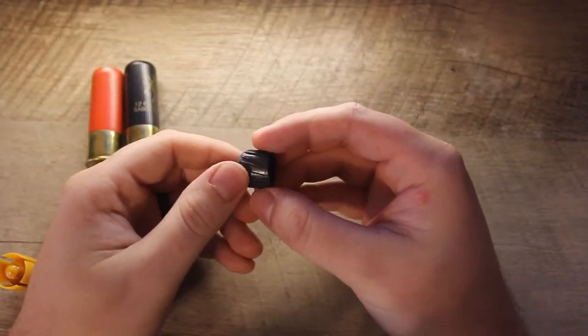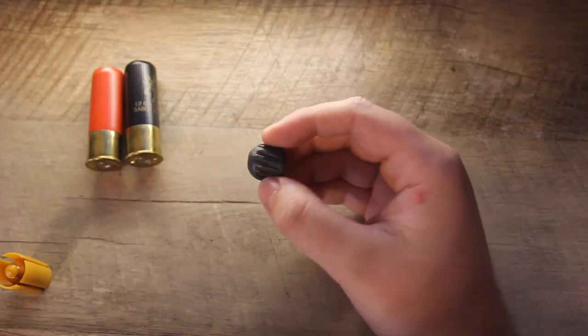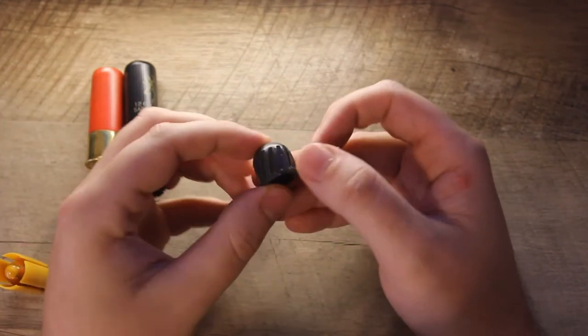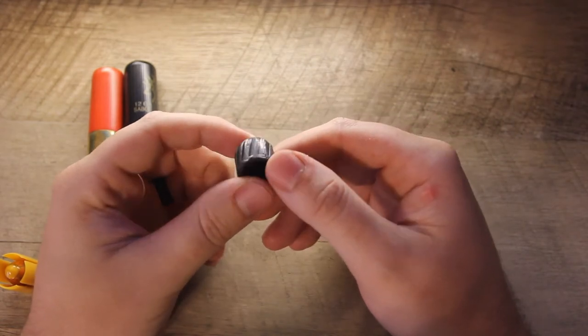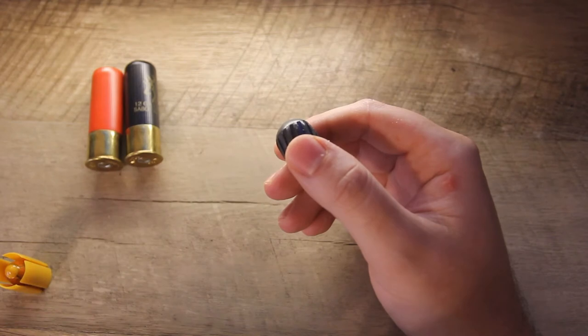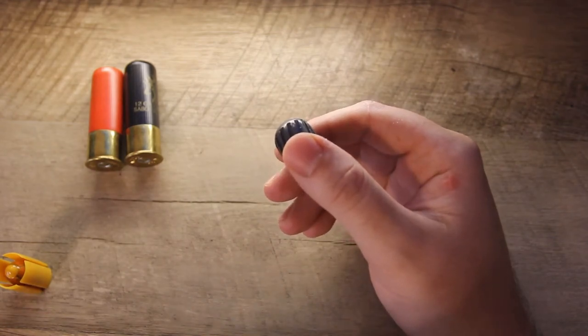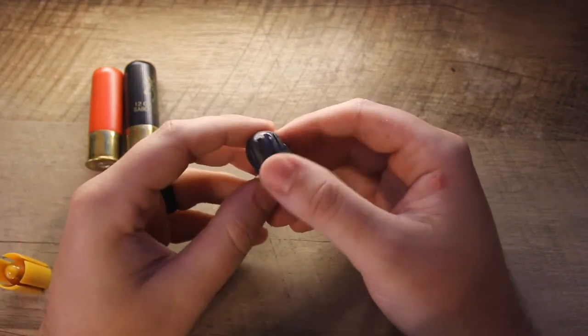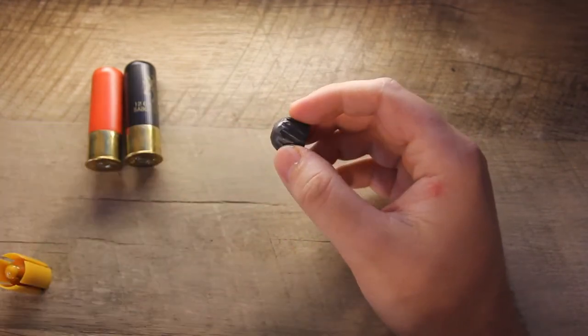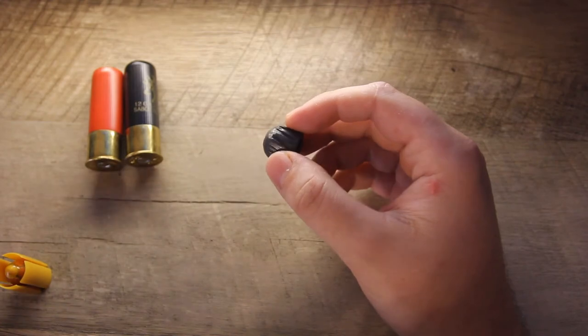Rifled slugs are designed to be used with a smooth bore, so if your shotgun barrel has rifling inside of the barrel already, this is the type of slug that you do not want to use. While it's unlikely to cause catastrophic failure, it can certainly damage the rifling inside of the barrel. It's darn near impossible for the rifling on the slug to match the internal rifling of the barrel, so over time that is going to create damage.